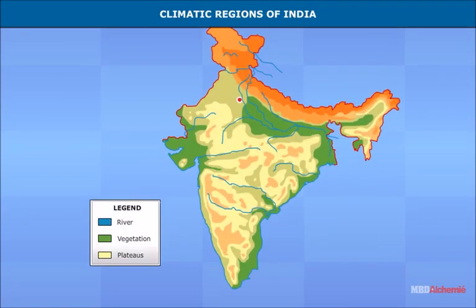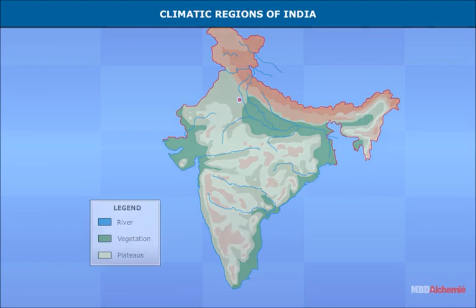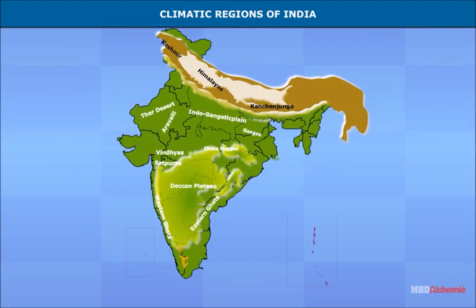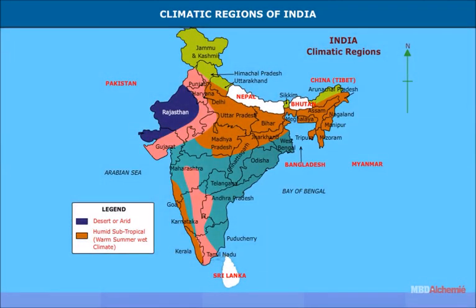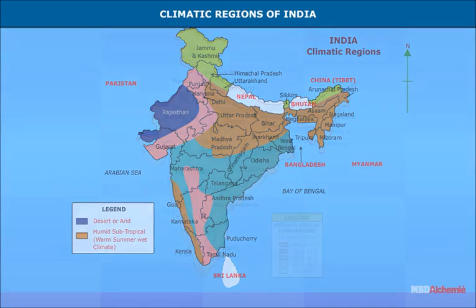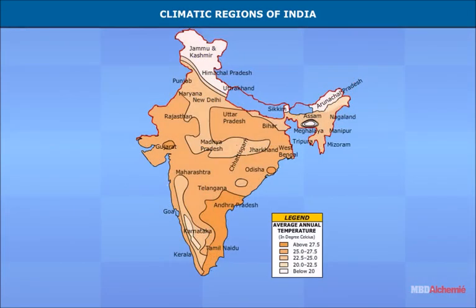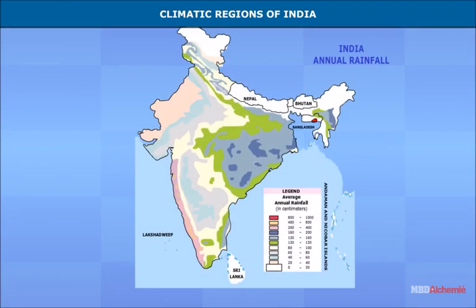India has as great a variety in climate as it has in relief. The climate of India ranges from dry desert type in Rajasthan to humid climate near the sea coasts and wet climate in Meghalaya in the northeast. The elements of weather such as temperature, precipitation, rainfall, snowfall, winds, and altitude control the climate of a particular place or region.